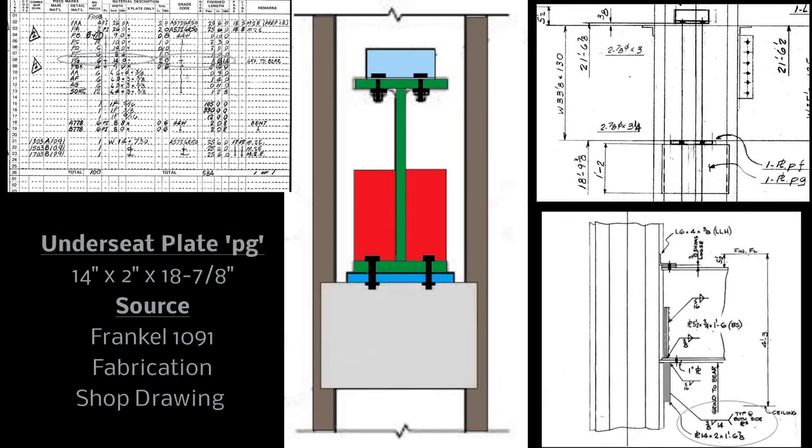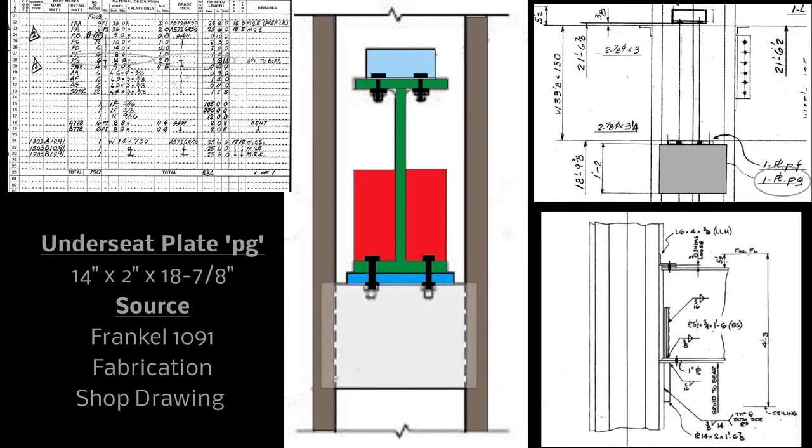Directly below this plate there is another plate called out as PG. It is 14 by 2 by 18 7/8 inches. It is referenced on the same drawing.